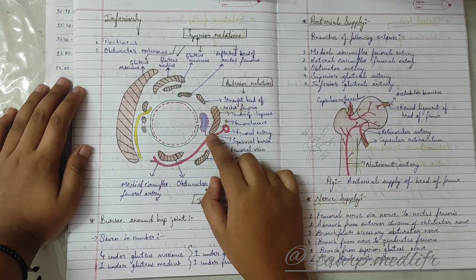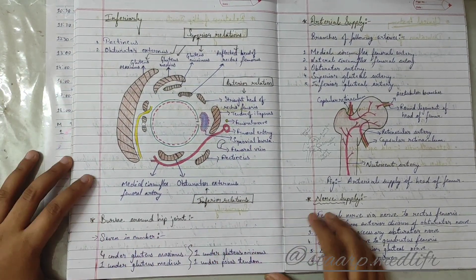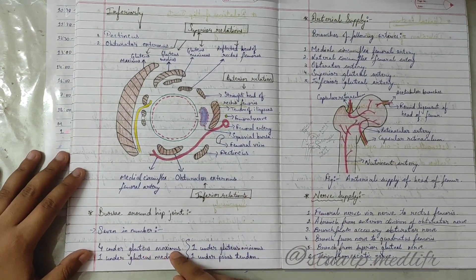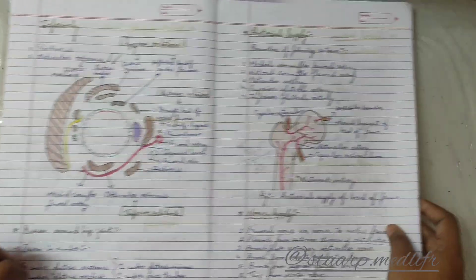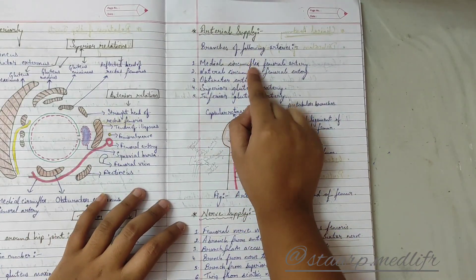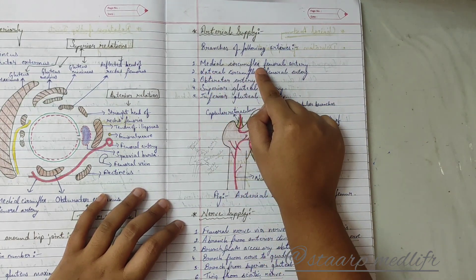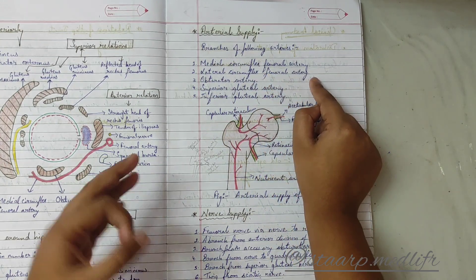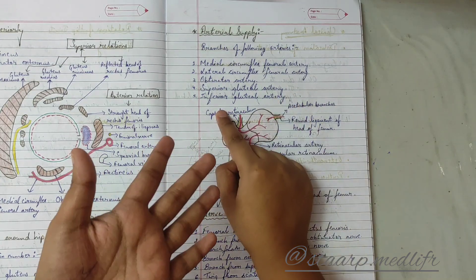There are seven bursae around the hip joint: four under gluteus maximus, one under gluteus medius, one under gluteus minimus, and one under the psoas tendon. The arterial supply comes from branches of the medial circumflex femoral artery, lateral circumflex femoral artery, obturator artery, superior gluteal artery, and inferior gluteal artery.